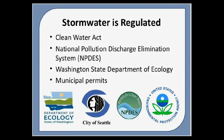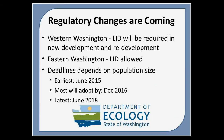Stormwater is regulated by the Clean Water Act, the National Pollution Discharge Elimination System, the Washington State Department of Ecology, and by Municipal Permits. Regulatory changes are coming to Washington State. The Department of Ecology is making regulatory changes to stormwater management and the use of LID to address the negative impacts of stormwater in our urban and natural landscape. Regulation changes will take place between 2015 and 2018, with most cities and counties adopting changes by 2016.